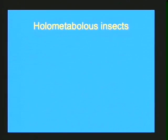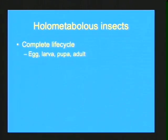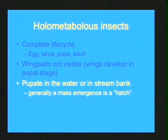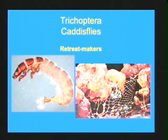The next group are the holometabolous insects — probably the most successful group of insects worldwide. Holometabolous means complete metamorphosis: they go through egg, larva, pupa, and adult stages. Just like butterflies and moths, the larvae break down their cells and reform in the pupal stage, growing their wings there. You will never see wing pads on the larvae of holometabolous insects. Since they do pupate, they usually pupate on the substrate or crawl into a moist, oxygenated stream bank, and are typically encased in a pupal case.